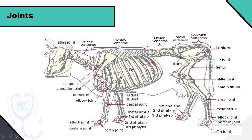In the appendicular skeleton, in the forelimb: the shoulder joint between scapula and humerus; the elbow joint between humerus and radius-ulnar bone; the carpal joint between the small carpal bones; the fetlock joint between metacarpus and first phalanx bone; the pastern joint between first and second phalanx; and the coffin joint between second and third phalanx bone.